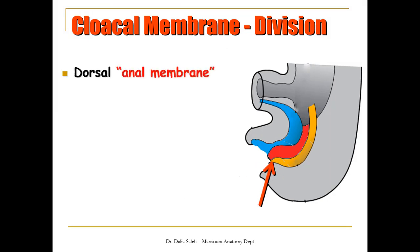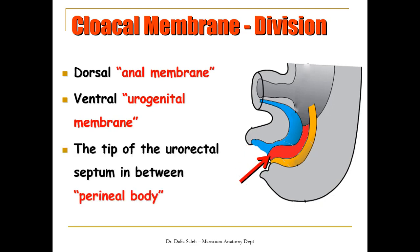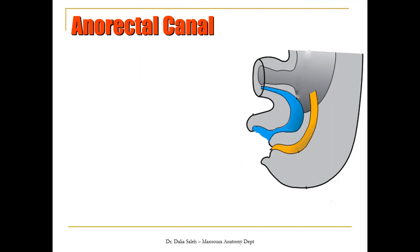Also, the cloacal membrane divides into the anal membrane dorsally and the urogenital membrane ventrally. The tip of the urorectal septum between these two membranes will give rise to the perineal body. To revise the development of the urogenital sinus, please refer to the videos on the development of the urinary bladder.